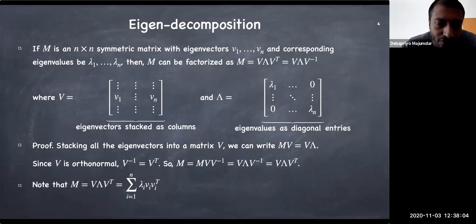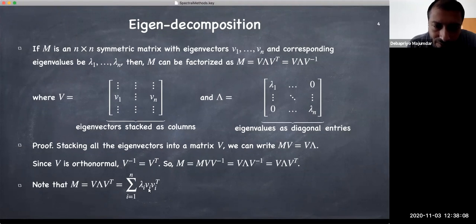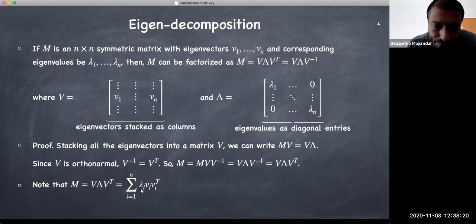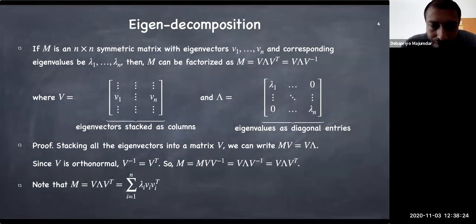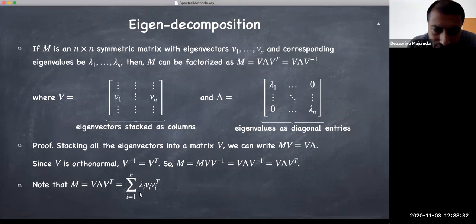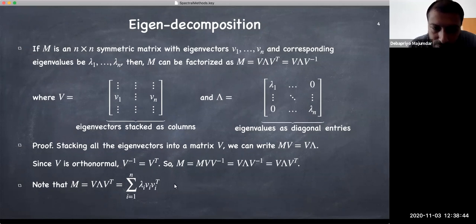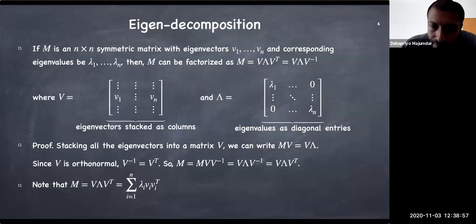Note that the eigen decomposition can also be perceived as: for every eigenvector vi, you multiply vi times vi transpose — an n×n matrix — scaled by lambda_i, and sum over all i from 1 to n. This is similar to singular value decomposition. Written out: M = lambda1 v1 v1 transpose + lambda2 v2 v2 transpose + … so there are n terms, each corresponding to one eigenvalue and one eigenvector.